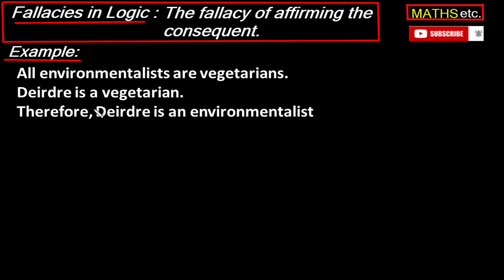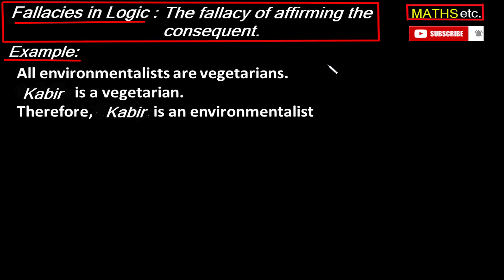Let's take another example and check whether it is a valid argument or contains a fallacy. The first premise says: all environmentalists are vegetarians. The second premise says: Kabir is vegetarian. The conclusion says: therefore Kabir is an environmentalist. The word 'all' is used here, so these are quantified statements.